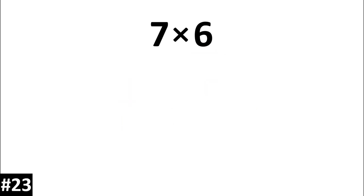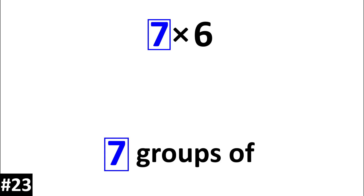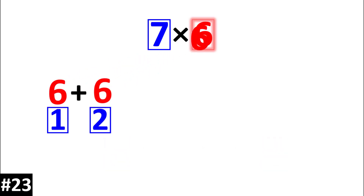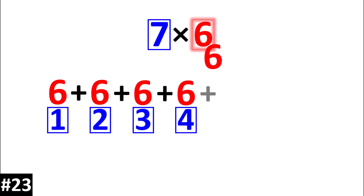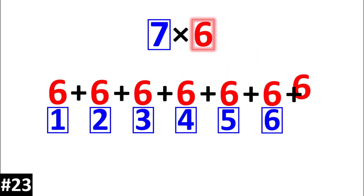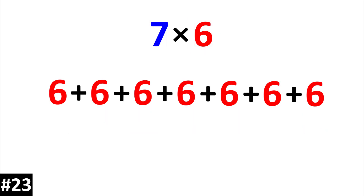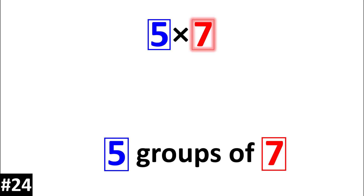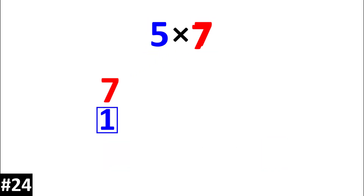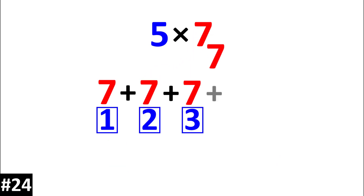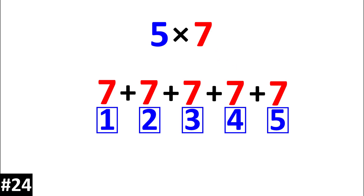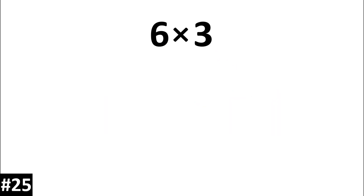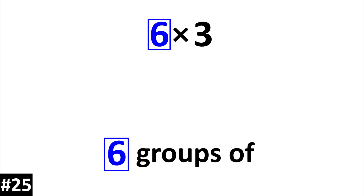7 times 6 is 7 groups of 6. 5 times 7 is the same thing as 5 groups of 7. 6 times 3 is the same thing as 6 groups of 3.